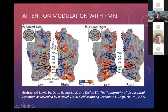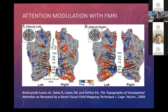You can also measure attentional modulation using fMRI. In this experiment, subjects stared at a fixation cross and attended to a given part of space, then stimuli were presented all over and the BOLD (blood oxygenation level dependent) response was compared for attended versus unattended conditions. There is more activity when you're attending than when you're not. This is a map of what parts of your cortex are responding more when you're attending to a given location.